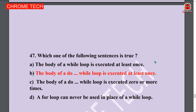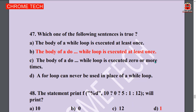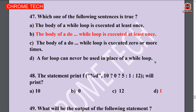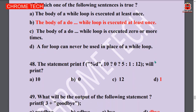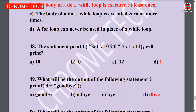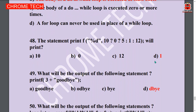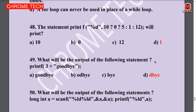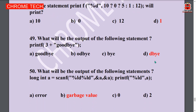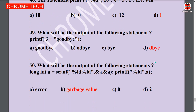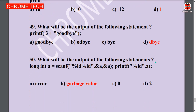Next question: Which one of the following sentences is true? The body of a do-while loop is executed at least once. Option B is the answer. Next question: The statement printf — Option D is the answer. Next question: What will be the output of the following statement? Option D is the answer.